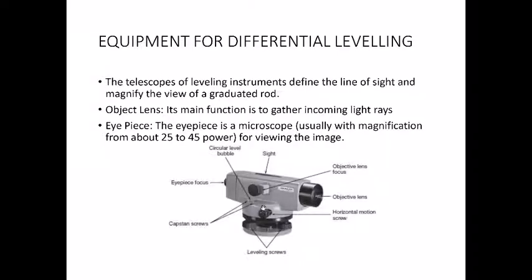We also have the horizontal slow motion screw. When looking through a zoomed view, moving the camera or instrument slightly moves the image a lot. So instead of moving the instrument with your hand, we use this screw — rotating it moves the instrument very slightly so the image doesn't change too quickly and the leveling staff doesn't get out of view. If you move it by hand, the staff might get out of view and you'd have to reposition.